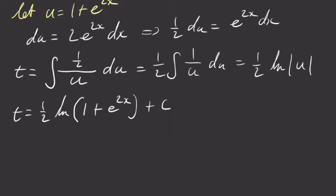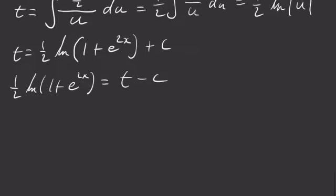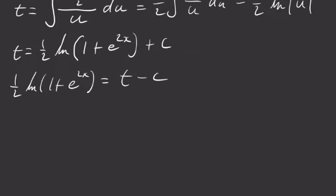So I'm going to rewrite this a little bit. I'm going to rewrite this as 1 half natural log 1 plus e to the 2x equals t minus c. I'm going to get rid of that fraction. I don't like fractions.